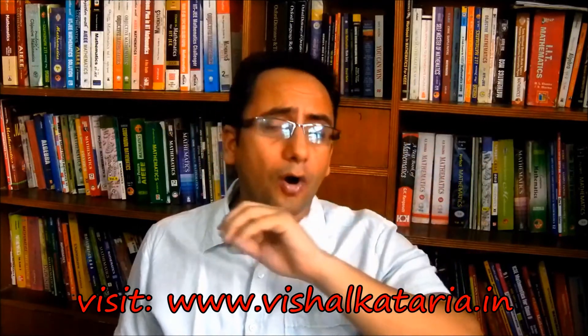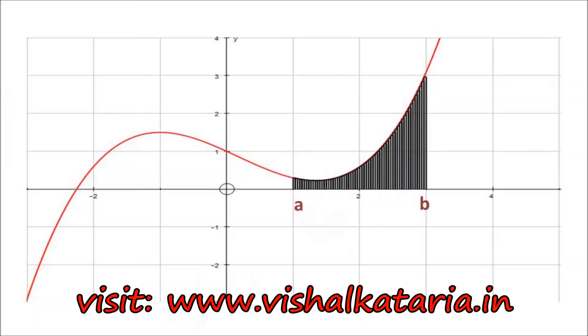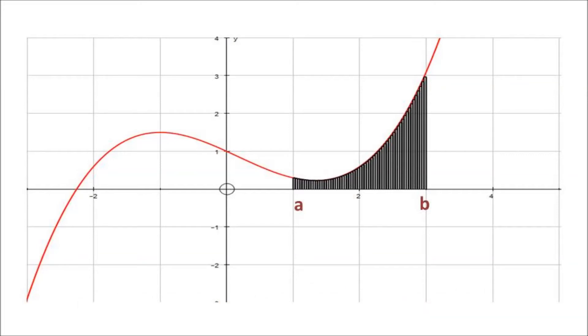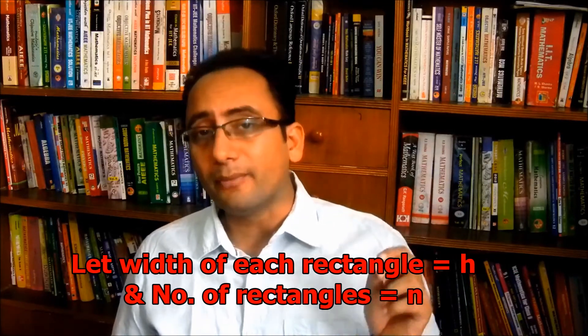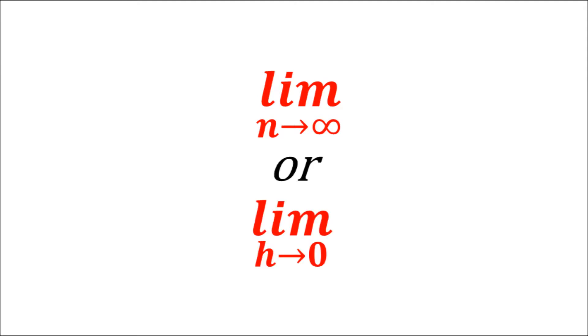Or we can say the definite integral from a to b of f(x) dx: in case the number of rectangles is sufficiently increased — or we can say it approaches infinity — the sum of areas of these rectangles will be exactly equal to the area under the curve from point a to point b. Let us consider the width of each rectangle to be h and the number of rectangles to be n. The sum of areas of these rectangles equals the area under the curve if and only if n approaches infinity and h approaches 0, meaning the width of each rectangle must be infinitely small.